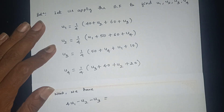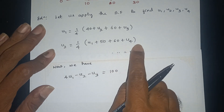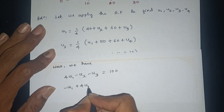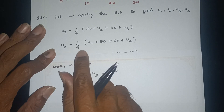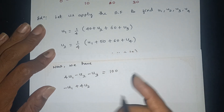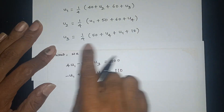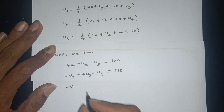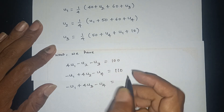U3 is equal to: 40 plus 60 is 100. Next, U2 is equal to U4, U4 is equal to U1. So 4U2 is derived from the neighboring values. 50 plus 60 is equal to 110. The third equation: U1 is equal to U3 and U4. So 50 plus 10 is 60.